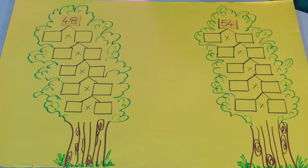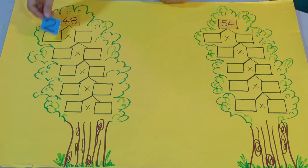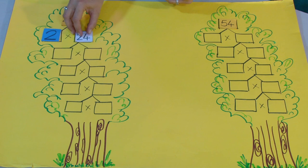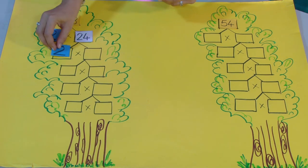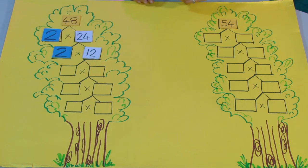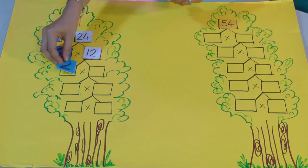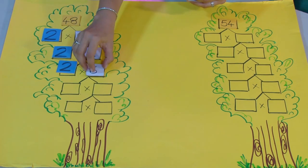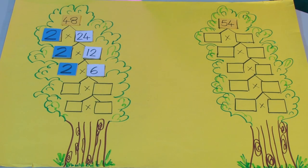The smallest prime number is 2. 48 will be factorized as 2 into 24. We will further factorize as 2 into 12. 12 will be factorized as 2 into 6. 6 will be further factorized as 2 into 3.